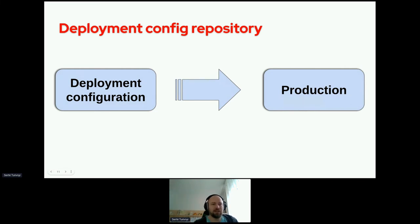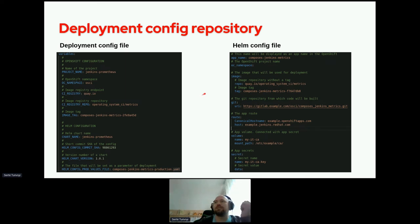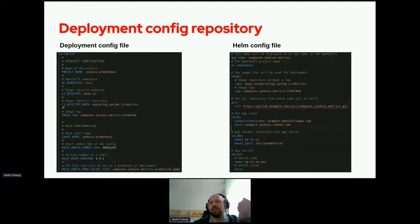Deployment configuration repository: this is the last step in our chain. It has a deployment config file that contains information about the OpenShift and Helm configuration. This file looks like this — here we have OpenShift configuration, or in other cases it could be Kubernetes configuration. Here we specify the image tag, the registry where we can get those images, and we can specify projects, namespace, etc. And we have Helm configuration.